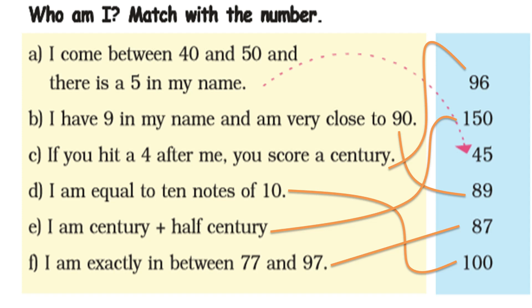Who am I? Match the number. I come between 40 and 50 and there is a 5 in my name — I am 45. I have 9 in my name and am very close to 90 — I am 89. If you hit a 4 after me, you score a century — I am 96. I am equal to 10 nodes of 10 — I am 100. I am a century plus half a century — I am 150. I am exactly between 77 and 97 — I am 87.